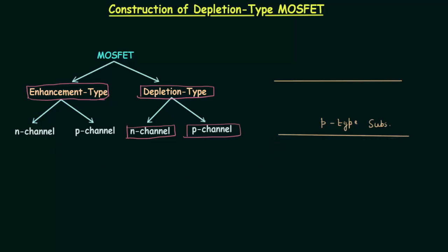If you remember the enhancement type MOSFET, we did the same thing — two n-type wells are created, and out of these two n-type wells, one acts as source and the other acts as drain. Till now everything is the same as enhancement type MOSFET.